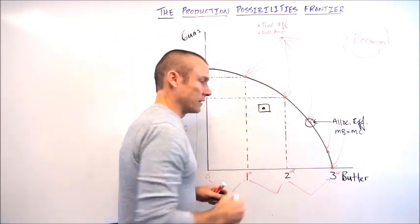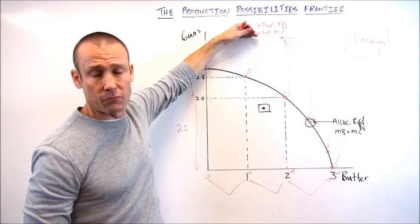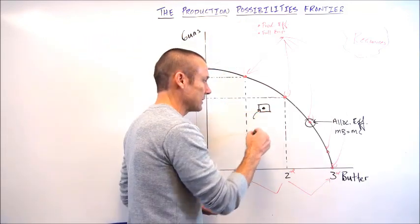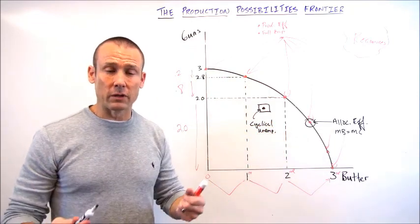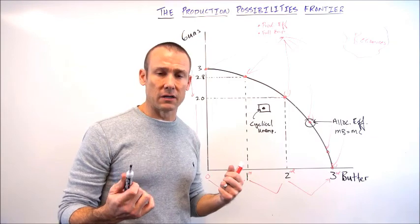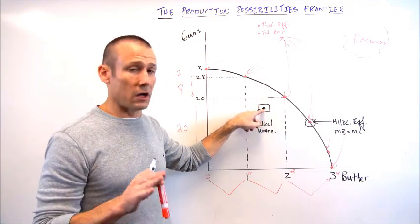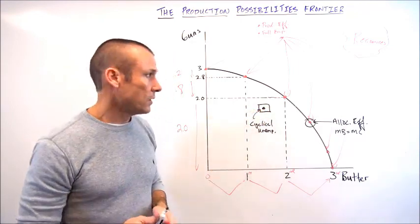If we end up inside the curve, it means we were either productively inefficient — misallocating resources — or we weren't fully deploying our resources and had idle ones. In a macroeconomics class, a point inside the curve is associated with cyclical unemployment: idle labor that is willing and able to work, actively seeking work, but laid off due to cyclical downturns in the economy.